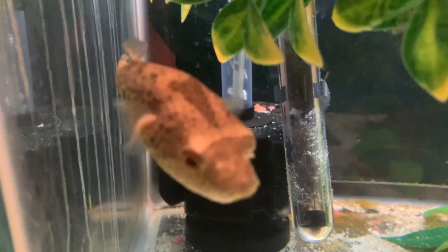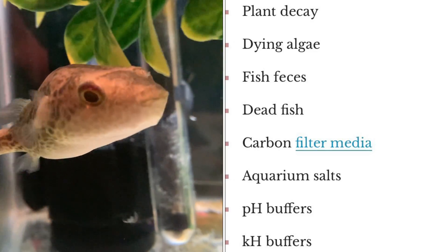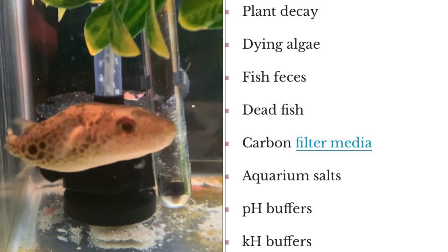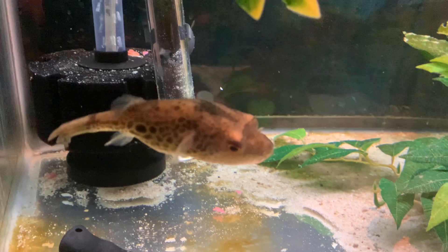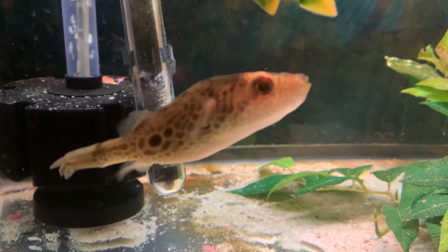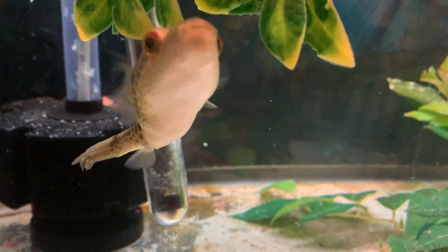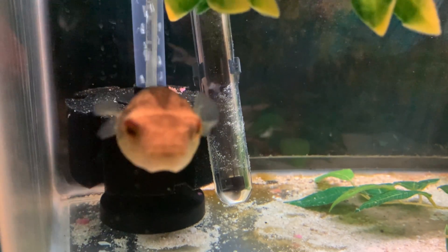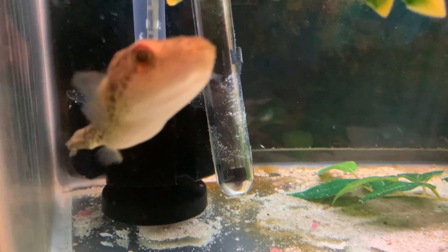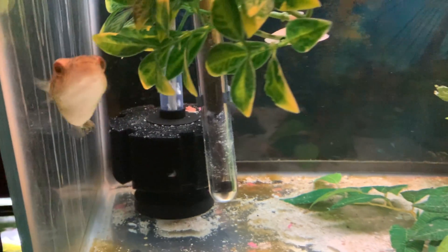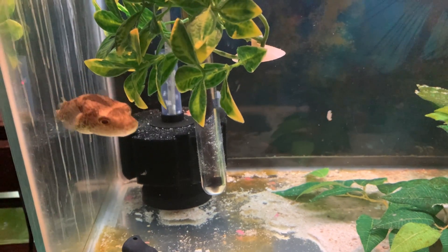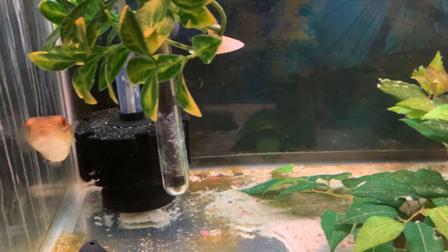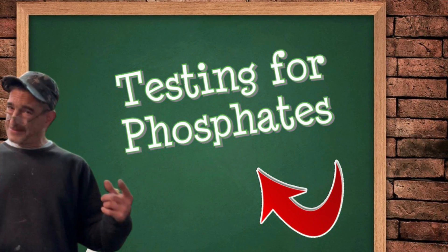Phosphate sources include uneaten food — the big one — as well as plant decay, dying algae, fish feces, dead fish, carbon filter media, aquarium salts, pH buffers, KH buffers, and your source tap water.